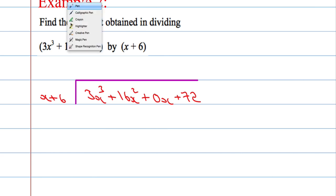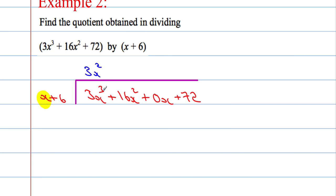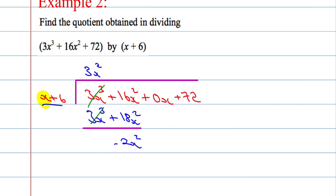All you're concerned with is dividing the x into each one as we go. 3x cubed divided by x goes 3x squared times. Then we take this 3x squared and multiply by the whole expression here: 3x squared times x is 3x cubed, and 3x squared times 6 gives me 18x squared. Put a line underneath and subtract the bottom expression from the top. 3x cubed cancels with 3x cubed, so 16x squared take away 18x squared gives me negative 2x squared. Take down the next value — plus 0x.